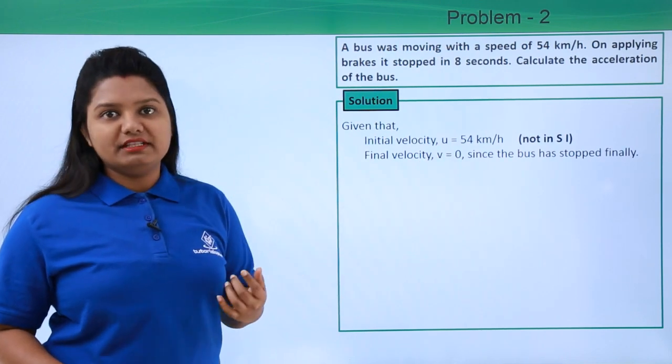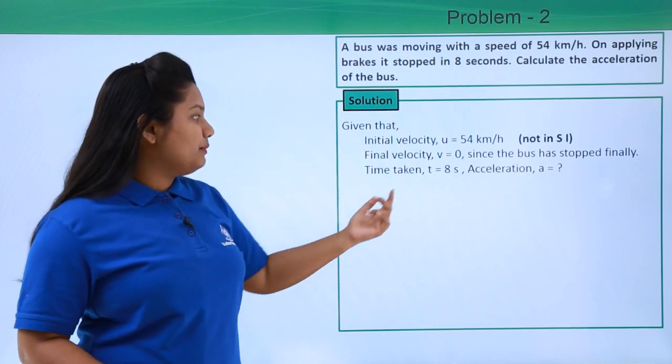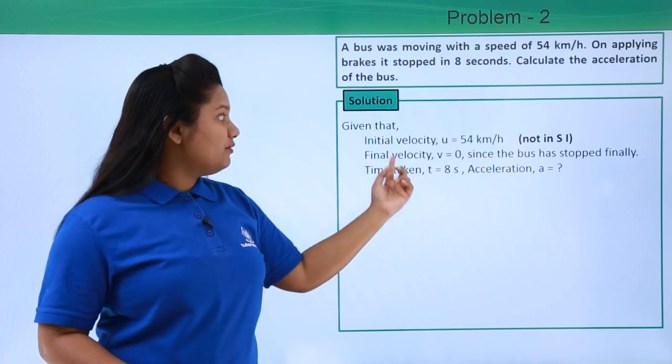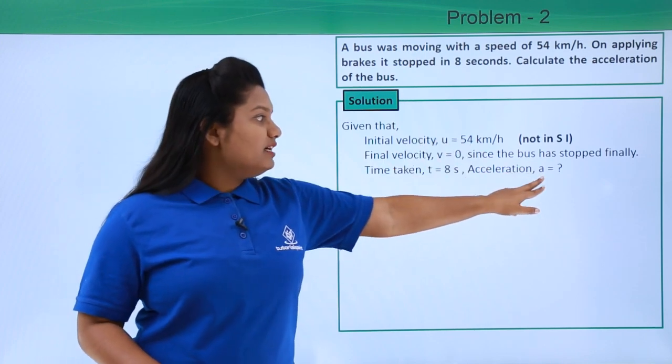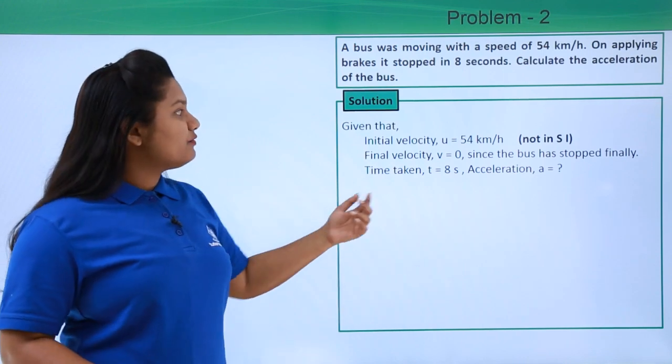Now, the time taken by the bus to stop is given by eight seconds. With this information, we need to check out what is the acceleration of the body. First of all, let us convert this kilometers per hour into meters per second.